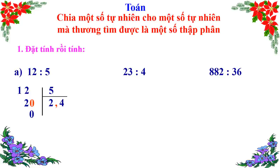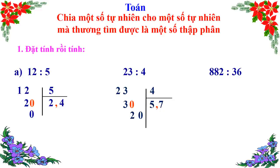Bài tiếp theo: 23 ÷ 4. Đặt tính: 23 ÷ 4 được 5, viết 5 ở thương; 5 × 4 = 20; 23 − 20 = 3. Viết dấu phẩy vào bên phải số 5 ở thương. Thêm 0 vào bên phải số 3 để được 30. 30 ÷ 4 được 7; 7 × 4 = 28; 30 − 28 = 2. Thêm 0 vào bên phải số 2 để được 20. 20 ÷ 4 = 5; 5 × 4 = 20; 20 − 20 = 0. Vậy 23 ÷ 4 = 5,75.